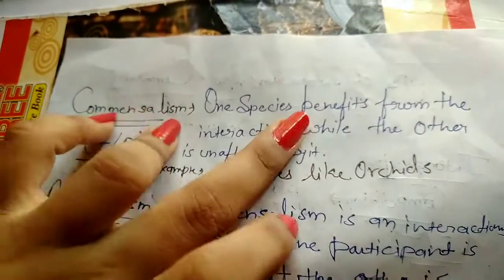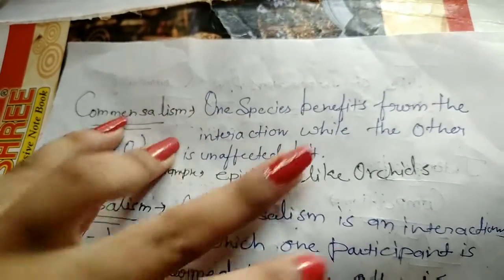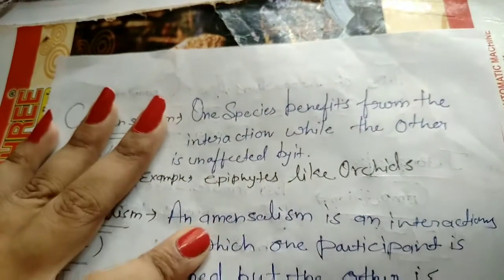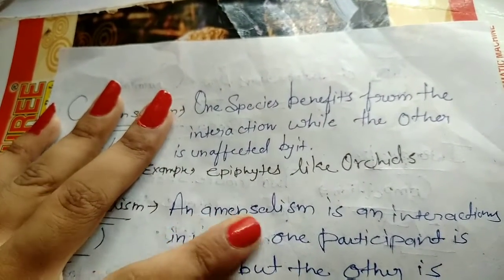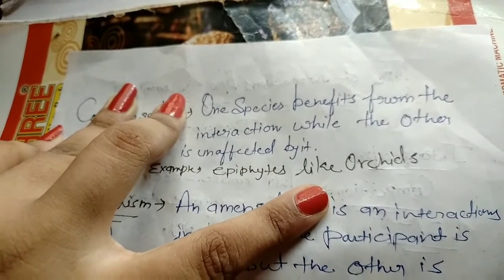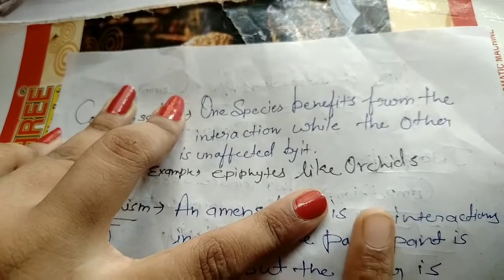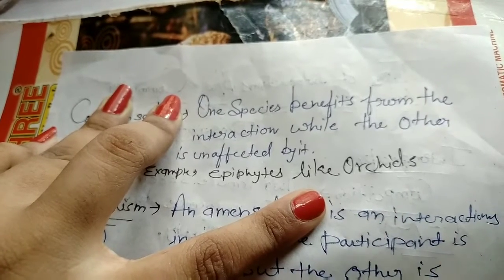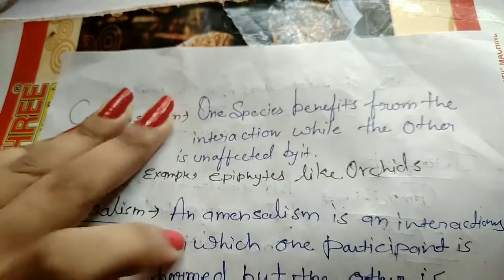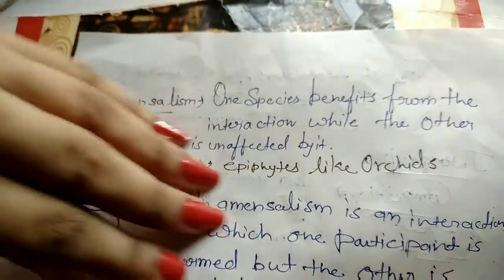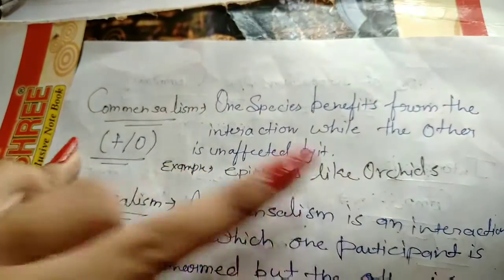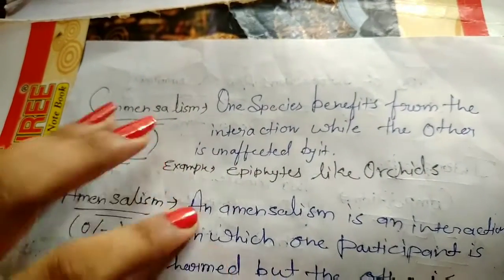In commensalism, one species benefits from the interaction while the other is unaffected. An example involves orchid plants: they use taller plants as a support to grow higher and get water and nutrients from the air. The orchid benefits while the host plant has no harm. This is why it is called commensalism.